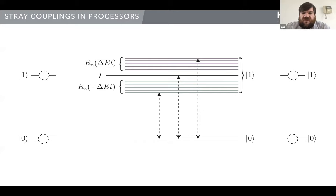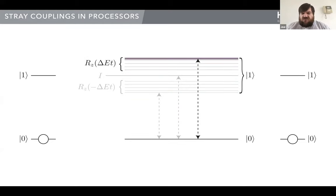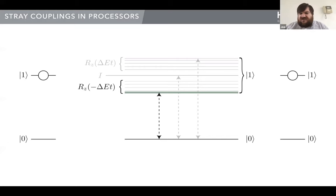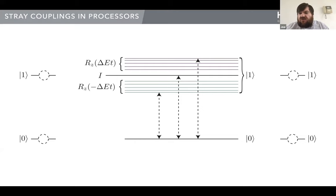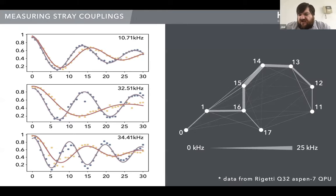It turns out that when you run tests on these devices, the calibration process kind of assumes the neighbors to be in zero. In that case, the X and Y rotations bring you from zero to one quite well — they're pretty close to on resonance. But as you change the state of the other qubits — if they're in one states, you're well off resonance, and if they're in a superposition, you get quite a lot of decoherence. This is real data taken from the latest Rigetti chip.